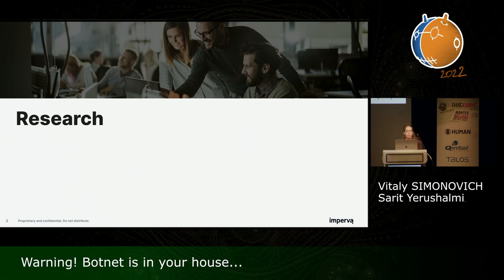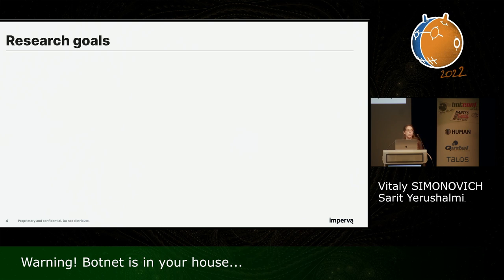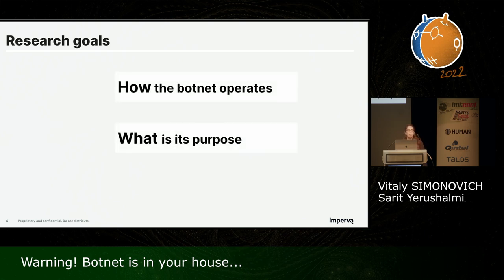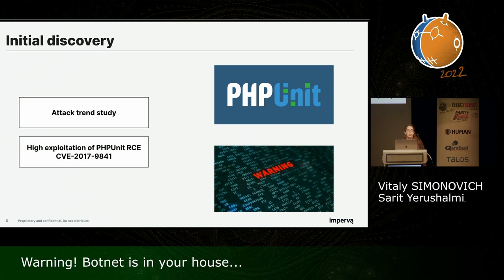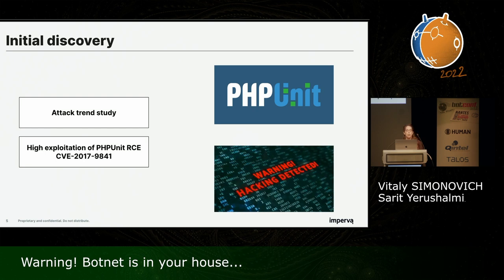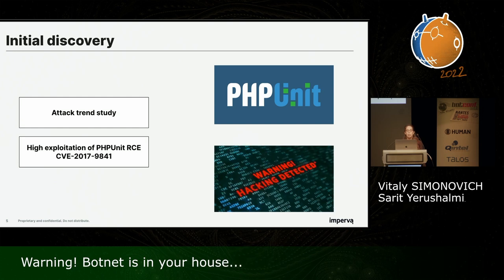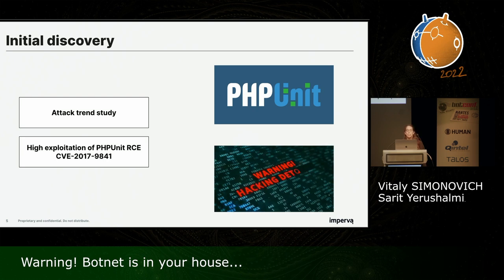We'll start with our research and its goals. When we stumble across an operation that looks like a botnet, we usually want to answer three main questions: how the botnet operates, what is the purpose of the botnet, and when it all started. Of course, we're also interested in understanding how to detect and stop the botnet. Our research started as part of a trend study in application security that we periodically do. We observed around 9 million attack attempts exploiting PHP Unit remote code execution, and we were wondering why this CVE is so popular among attackers.